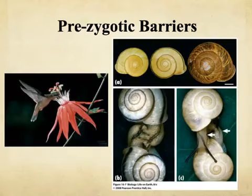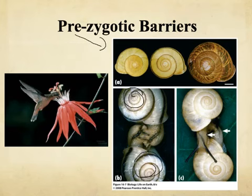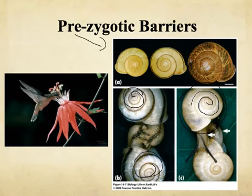Here there's a picture showing the snail spiral. If two snails both spiral clockwise, they're able to mate successfully. But if one snail's shell spirals counterclockwise and the other's goes clockwise, you can see they cannot mate successfully.